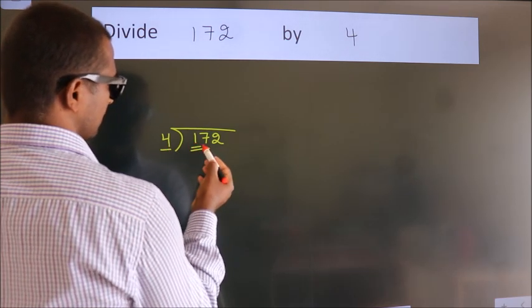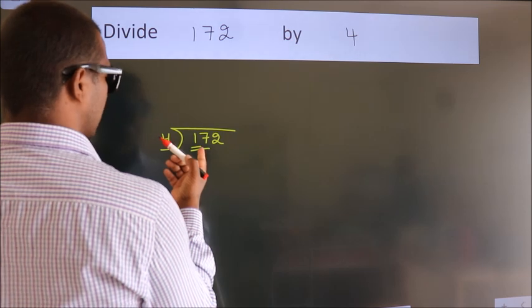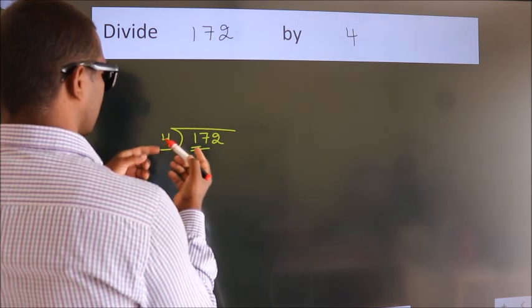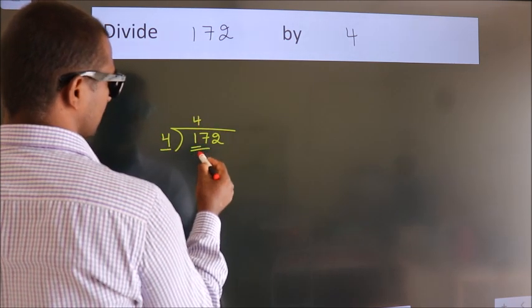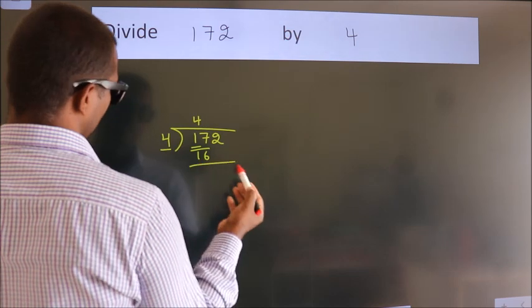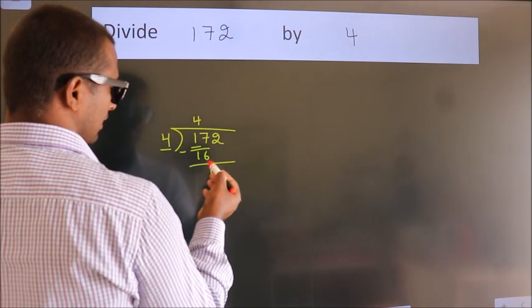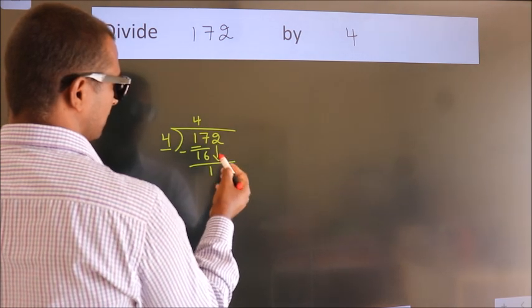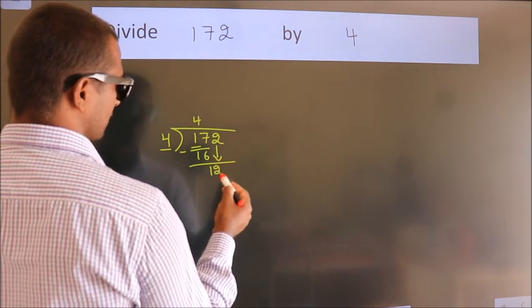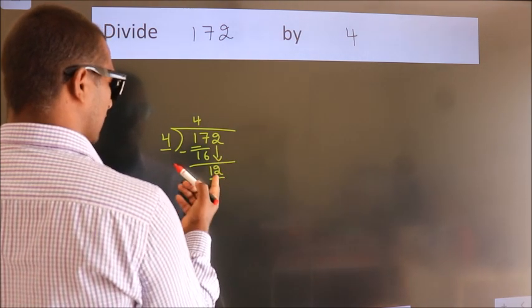...should take two numbers: 17. A number close to 17 in the four times table is 4 times 4 equals 16. Now we subtract and get 1. After this, bring down the beside number, so 2 comes down. We get 12. When do we get...